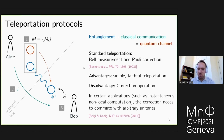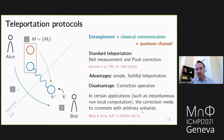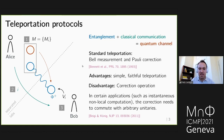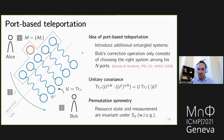However, one disadvantage of standard teleportation is the correction operation — in applications like instantaneous non-local computation, you want the correction to commute with an arbitrary unitary. This is where port-based teleportation enters — an idea by Ishizaka and Hiroshima — where the goal is to simplify the correction operation as much as possible at the expense of more resources.